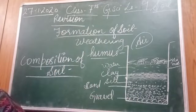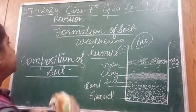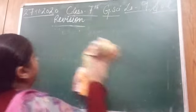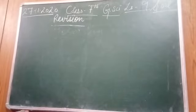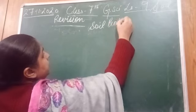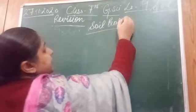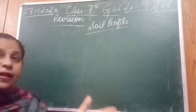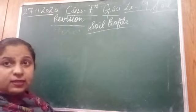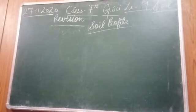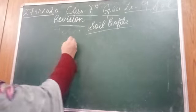Now coming to the next topic — soil profile. What is soil profile? We always see the upper part of the soil, but soil profile is a vertical section taken through the soil through which the different layers of the soil are seen. There are basically four layers of the soil.